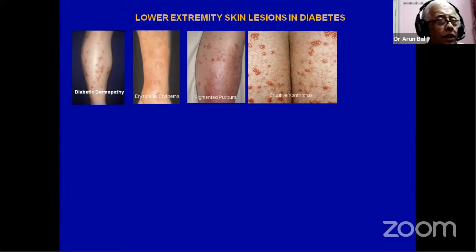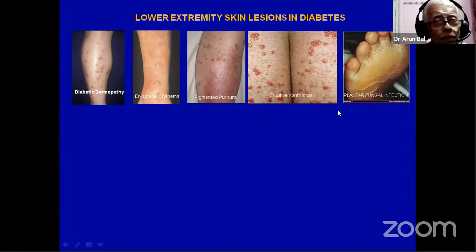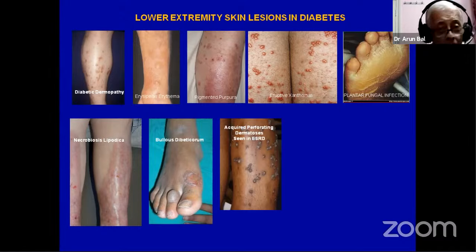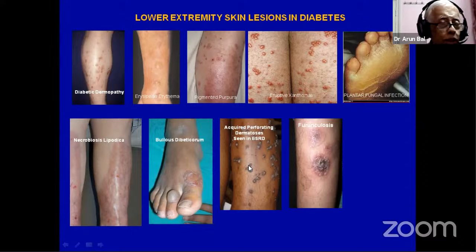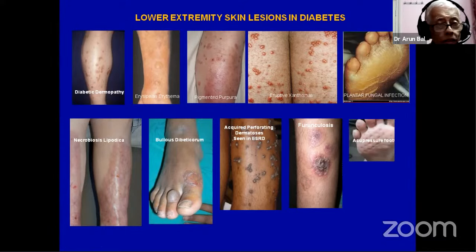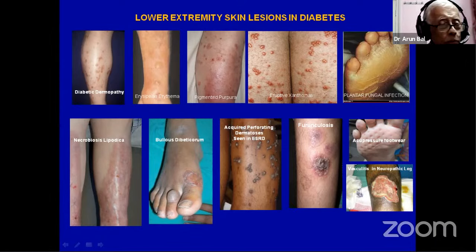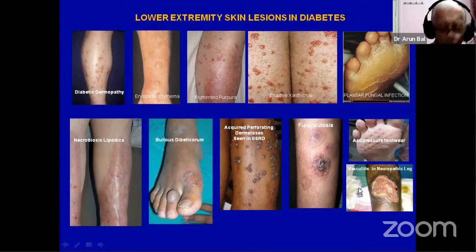Neuropathy progression is directly related to blood sugar — any time HbA1c crosses 7, neuropathy progression will be very fast. You can have fungal infection, which most of the time is treated as dry skin; this is a classical diabetic plantar skin fungal infection. There is also bullous diabeticorum, where blisters occur because of hyperglycemia. In patients with end-stage renal disease, the skin picture is classical. And not everything in the lower limb is due to diabetes — vasculitis, for example, requires biopsy and separate treatment.